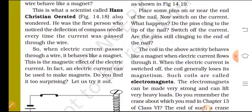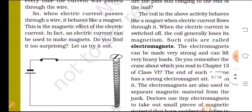Hans Christian Oersted was the first person who noticed the deflection of compass needle every time current was passed through the wire. He observed that when electric current passes through a wire, it behaves like a magnet. This is the magnetic effect of the electric current.